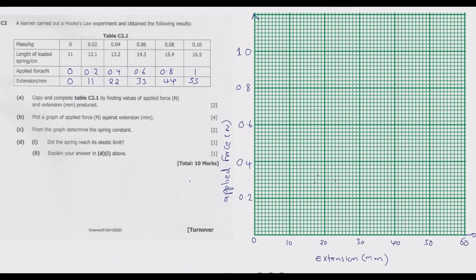The graph axes are clearly labeled: extension in millimeter and applied force in newtons. Extension is from 0 to 60 in increment of 10, so the increment should be equal so the graph is not distorted and drawn to scale. Applied force is in increment of 0.2 newtons up to 1 newton maximum. We can easily transfer this information by plotting. Start with 0,0 which is here, then we go to 11 millimeter comma 0.2, so along 0.2 we plot 11.